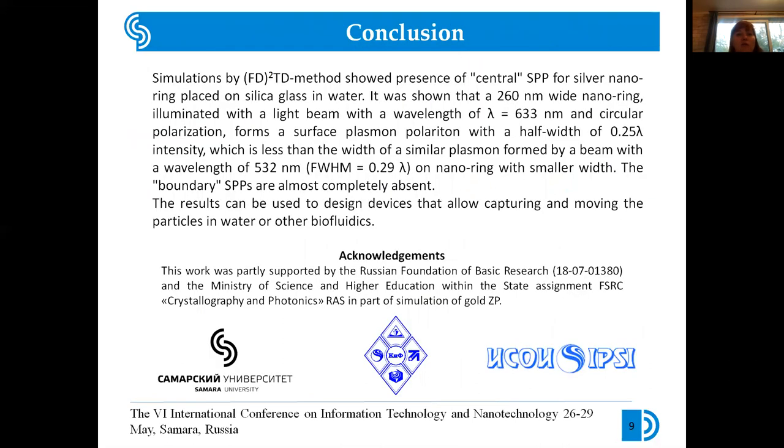The main results of our research are presented on the slide. Using the FDTD method, we studied the formation of surface plasmons on the surface of nano-strips and nano-rings. It is shown that 260 nm wide nano-ring illuminated by a light beam with a wavelength of 633 nm and with radial polarization forms a surface plasmon polariton with full width at half maximum of intensity equal to 0.25 of wavelength. It is less than the width of the similar plasmon formed by a beam with a wavelength of 532 nm in terms of wavelength.